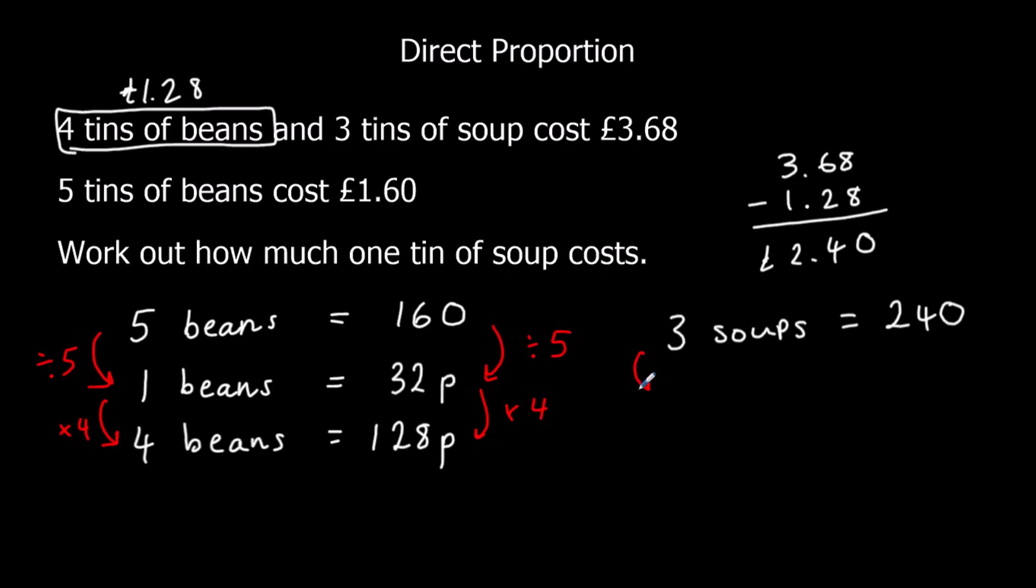So that means 3 soups must be £2.40 or 240p. And if I divide by 3, so if I divide the number of tins of soup I buy by 3, I'll divide the cost by 3.